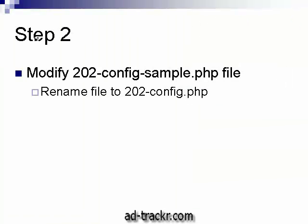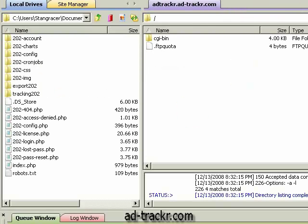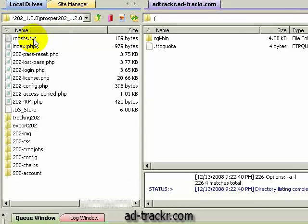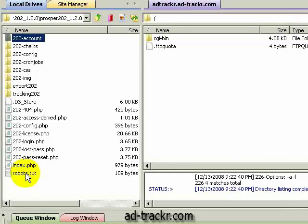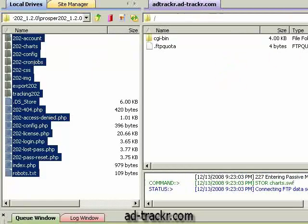Now into step three: we want to FTP all our files and folders to the server. Make sure the transfer type is binary. If you don't change the transfer type of your FTP client to binary, you're going to get a byte error in step four when we go to set up a username and password and log in. So if you end up getting a byte error on step four, come back to the FTP, set your transfer type to binary, and re-upload your files and folders to the server. Click on the top file, hold Shift, click on the bottom to highlight it all, and simply drag it over. I'm going to pause this video — it's going to take a few minutes to upload, and when it's done we'll come right back.